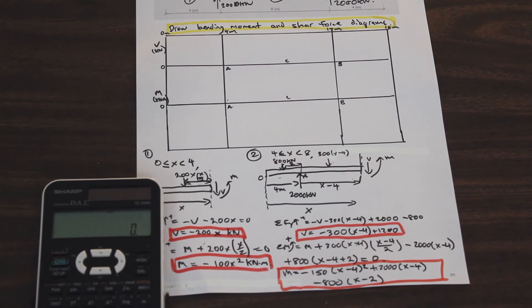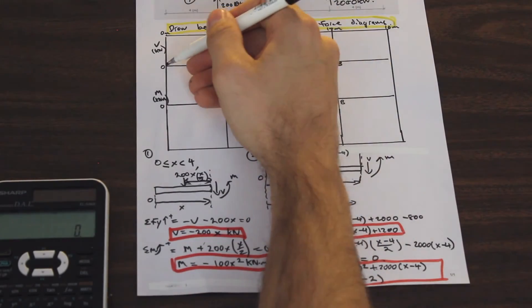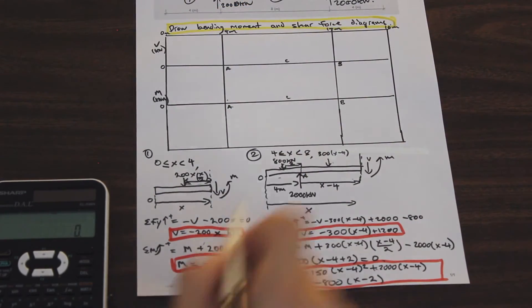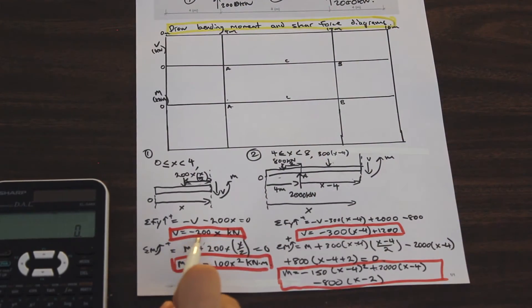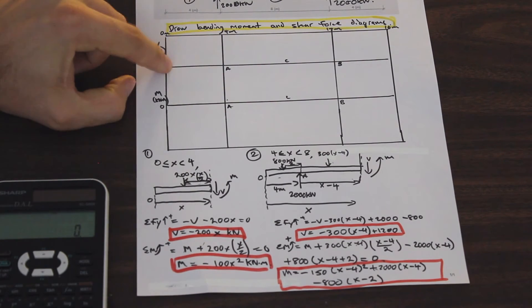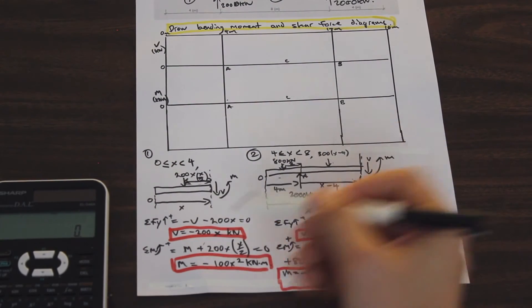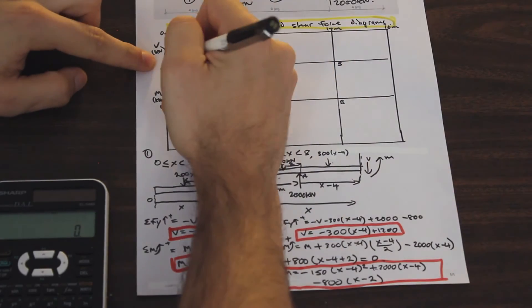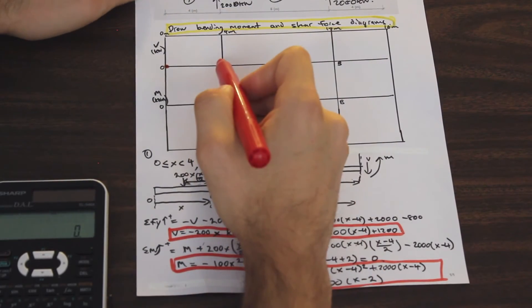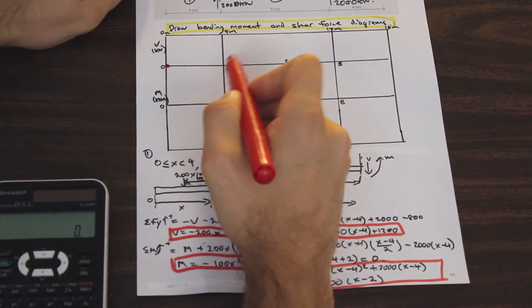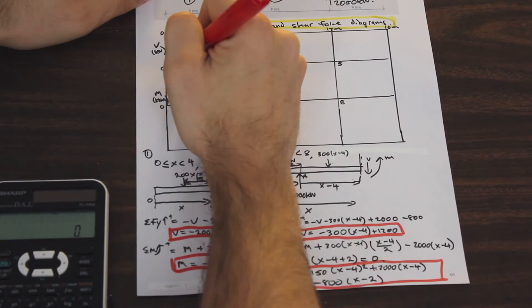Now let's draw the shear and bending moment diagram. From 0 to 4 meters we use V = −200x and M = −100x². For the shear: when x = 0, V = 0, that's our starting point. When x = 4, V = −800. So we draw a straight line (it's linear) from 0 down to −800.